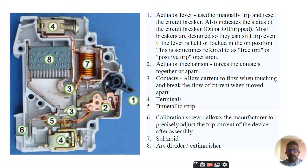We are having the actuated lever, actuated mechanism that forces the contacts together. There's a contact that allows current to flow when touching and breaks the flow when moved apart. Number 4 is a terminal, then we have the bi-metallic strip.